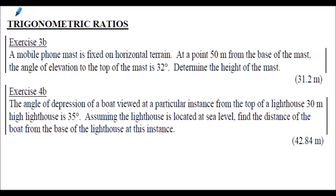Here are a couple of exercises extracted from our notes related to trigonometric ratios. The process involved with solving these exercises is very similar to that shown in the previous presentation. The only difference is the terminology. In Exercise 3b the angle of elevation is mentioned, and in Exercise 4b the angle of depression is mentioned. I encourage you to attempt these two exercises — the answers are shown on the right-hand side in brackets, and the full worked solutions are on the following slide.